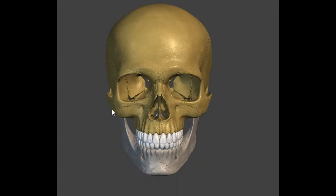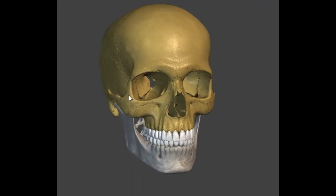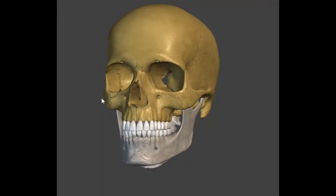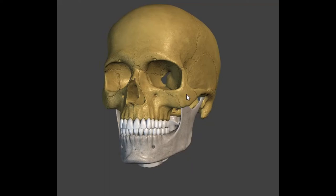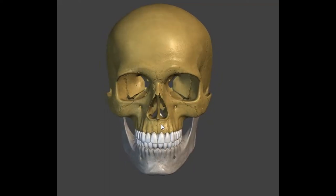This bone right here — not the highlighted portion but where my cursor is — is your cheekbone, called the zygomatic bone. Let's review what we've done so far: frontal bone, nasal bone, maxilla, alveolar process, mandible, and zygomatic bone.